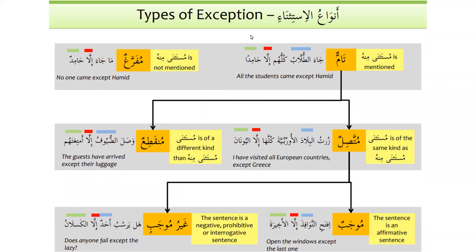We have seen that there are different types of exception. The first one is tamun, and tamun means that mustathna minhu is mentioned — that's why it is called tamun. For example: 'All the students came except Hamid.' So we know that 'attulabu' is mustathna minhu. Mufarragun is where mustathna minhu is not mentioned — so there's a major difference between these two.